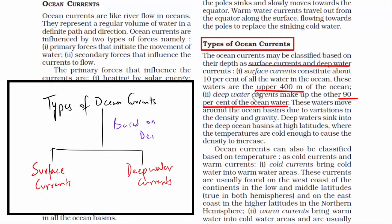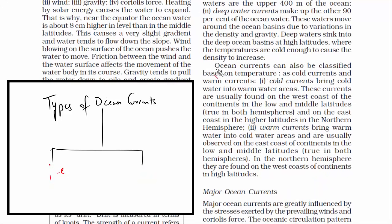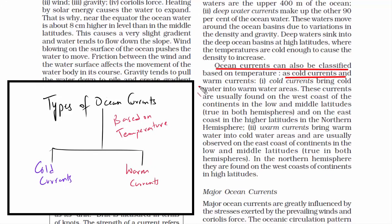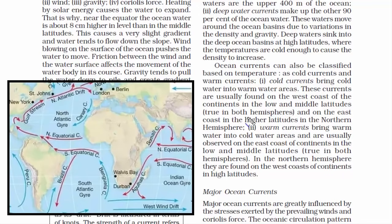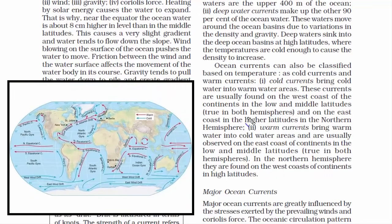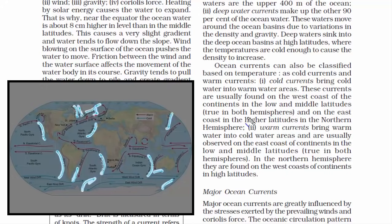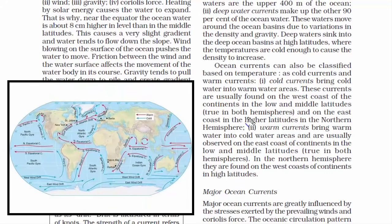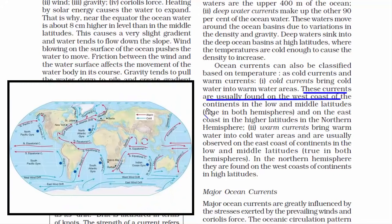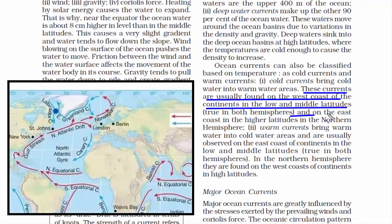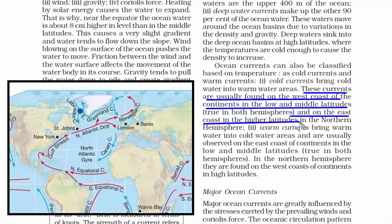Ocean currents are also classified by temperature: cold currents and warm currents. Cold currents bring cold water into warm areas and are usually found on the west side of continents in lower and middle latitudes, and on the eastern side in higher latitudes. The trade winds in tropical regions flow from east to west, moving the upper — relatively cold — water layer of the eastern ocean westward, which is why the western coasts of continents have cold currents.